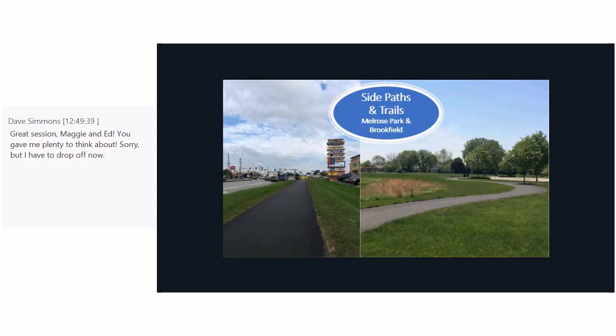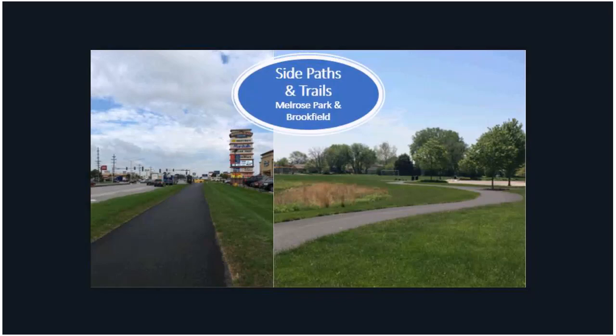Side paths and trails are part of a low-stress network in the suburbs and are particularly useful along arterials and busier streets. You want to make sure they're sited to minimize driveway crossings and wide enough to accommodate both bicyclists and pedestrians. These examples are from Melrose Park and Brookfield — side paths are definitely the more common treatment in many suburban Chicagoland communities.